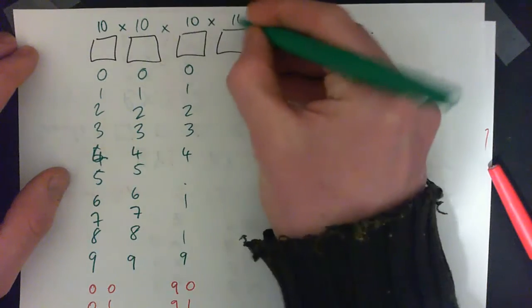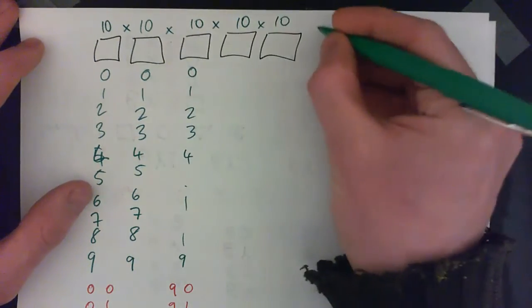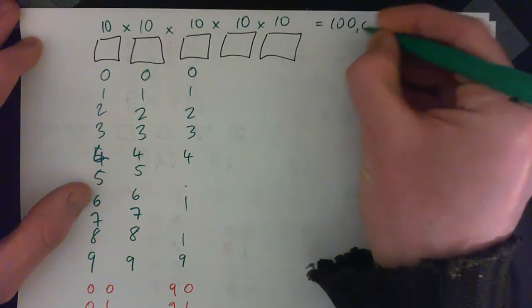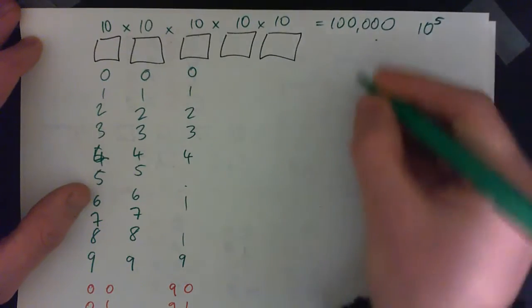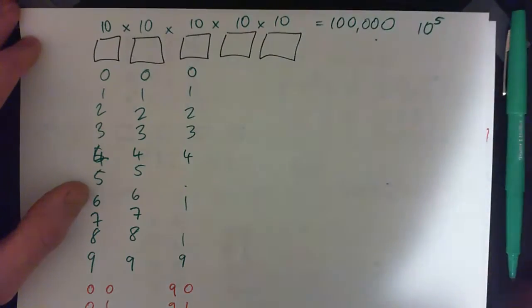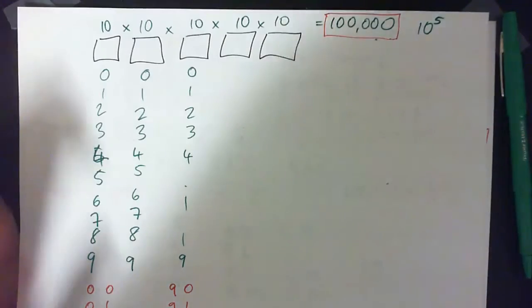And with four wheels, it makes ten thousand possibilities. And with five wheels, it makes a hundred thousand possibilities. That's ten to the power of five, by the way. So that's the answer - there's a hundred thousand possible combinations on a bike lock like this with five wheels.